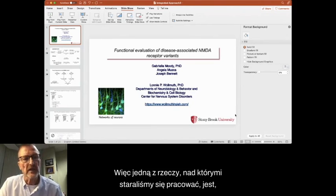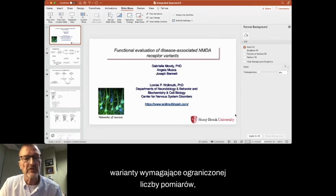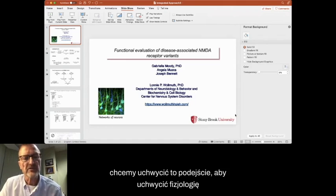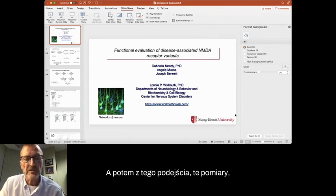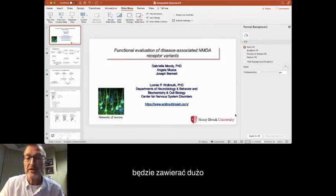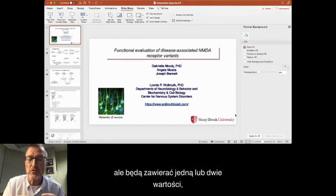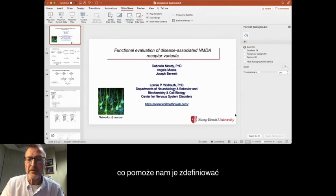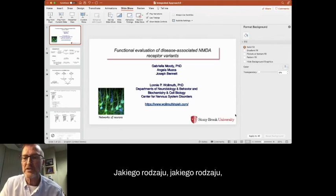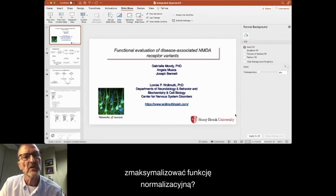So one of the things we've been trying to work on is to develop an approach that can characterize these variants that requires a limited number of measurements, but also captures aspects of the physiology, right? We want this approach to capture the physiology of NMDA receptor. And then from this approach, these measurements we're going to make, we want to generate some consolidated parameters. So again, these consolidated parameters are going to contain a lot of information about these different biophysical properties, but they're going to contain it into one or two values, which will aid in allowing us to define them as loss or gain of function. And then finally, we want to use these consolidated parameters to help us guide the pharmacology. What sort of pharmacology can we use to normalize these, to maximize normalizing function?